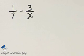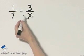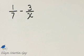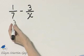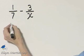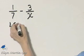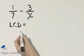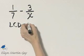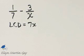Let's subtract these two fractions. Our operation is subtraction, and notice we do not have the same denominators, so we must first take a step and write each fraction as an equivalent fraction with the same denominator. The denominator we'll use is the least common denominator. In this case, it will be the product of these two denominators, or 7x.